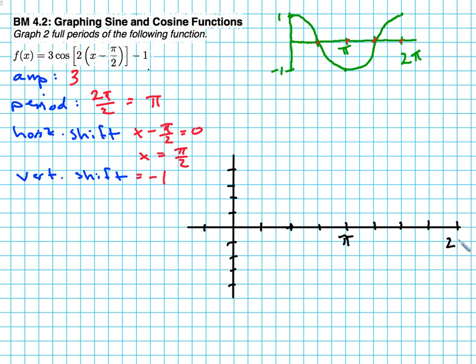And then 1, 2, 3, 4 is 2π. Now I'll go ahead and this would be π over 2. Cut that in half. And halfway here would be 3π over 2.